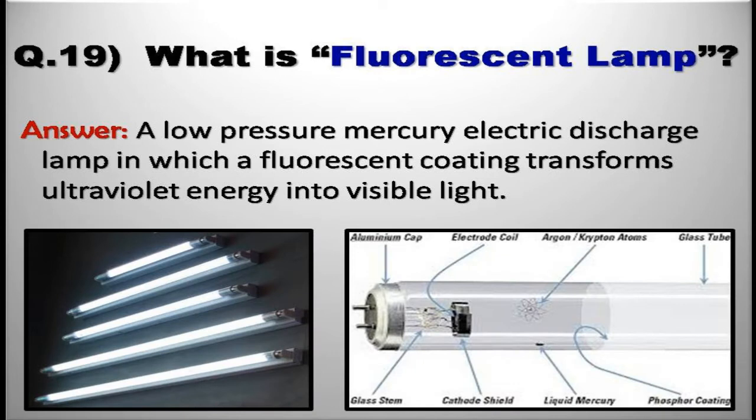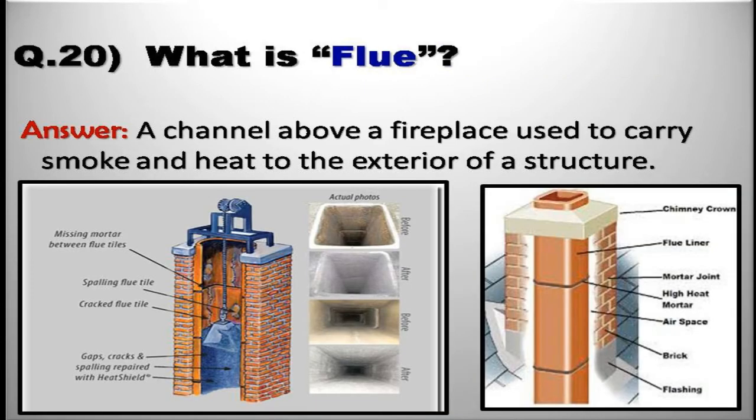What is fluorescent lamp? A low pressure mercury electric discharge lamp in which a fluorescent coating transforms ultraviolet energy into visible light. What is flue? A channel above a fireplace used to carry smoke and heat to the exterior of a structure.